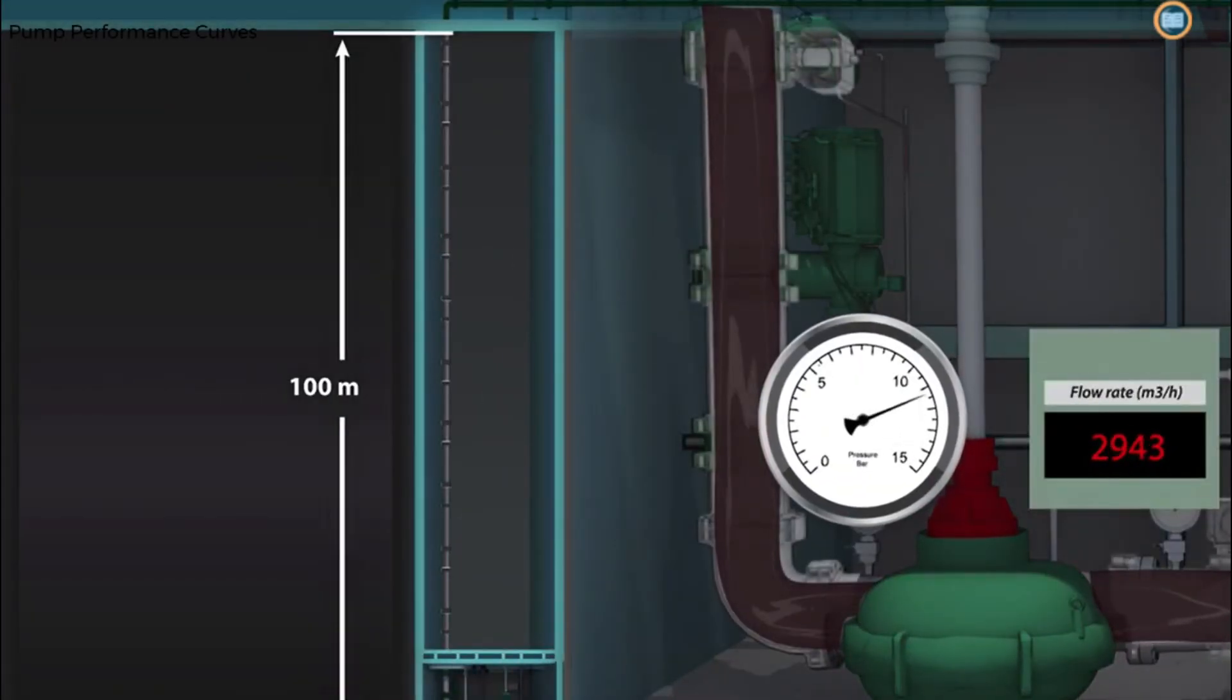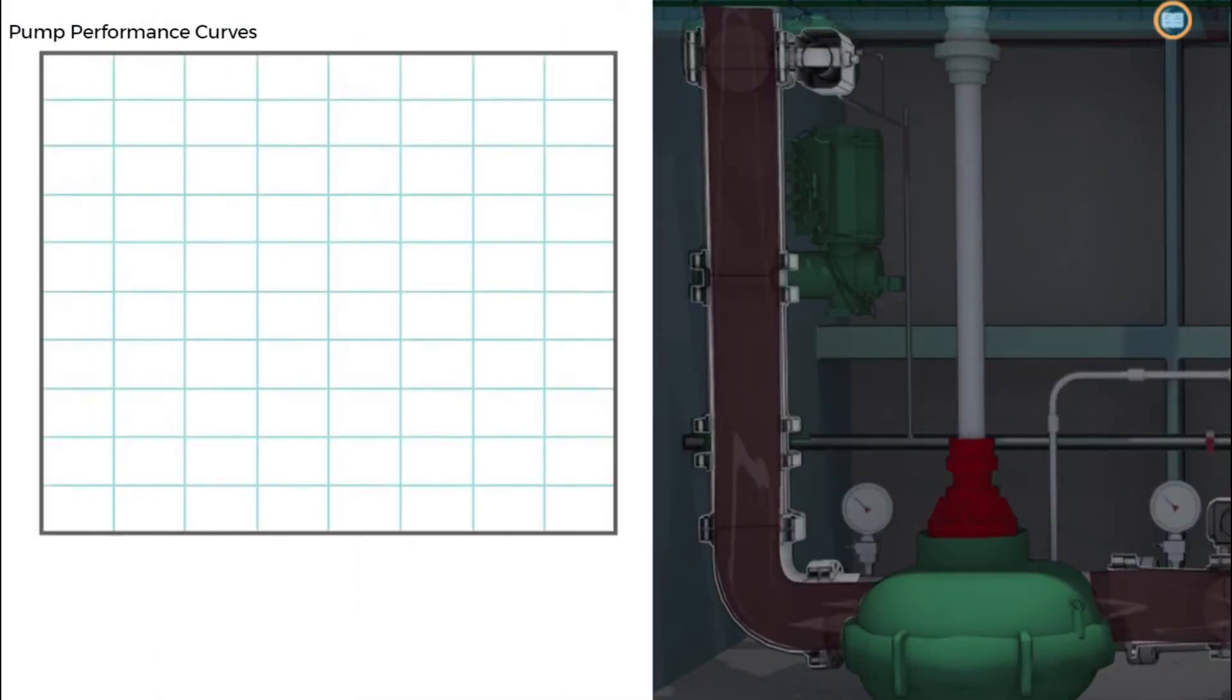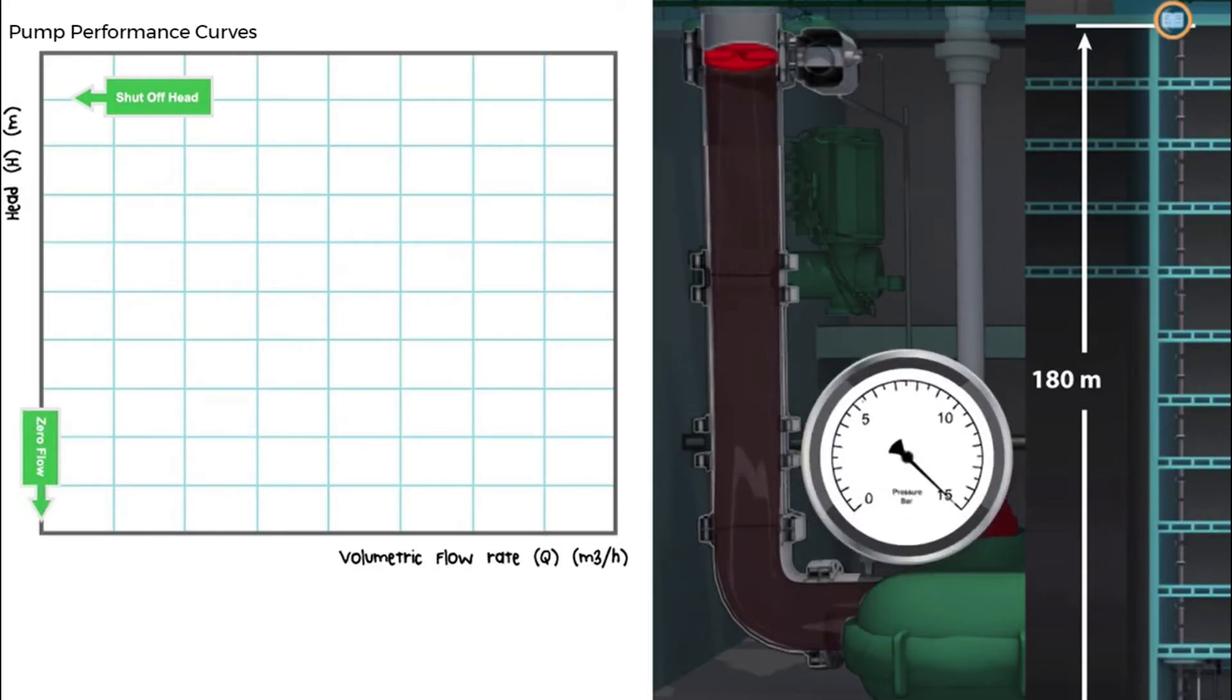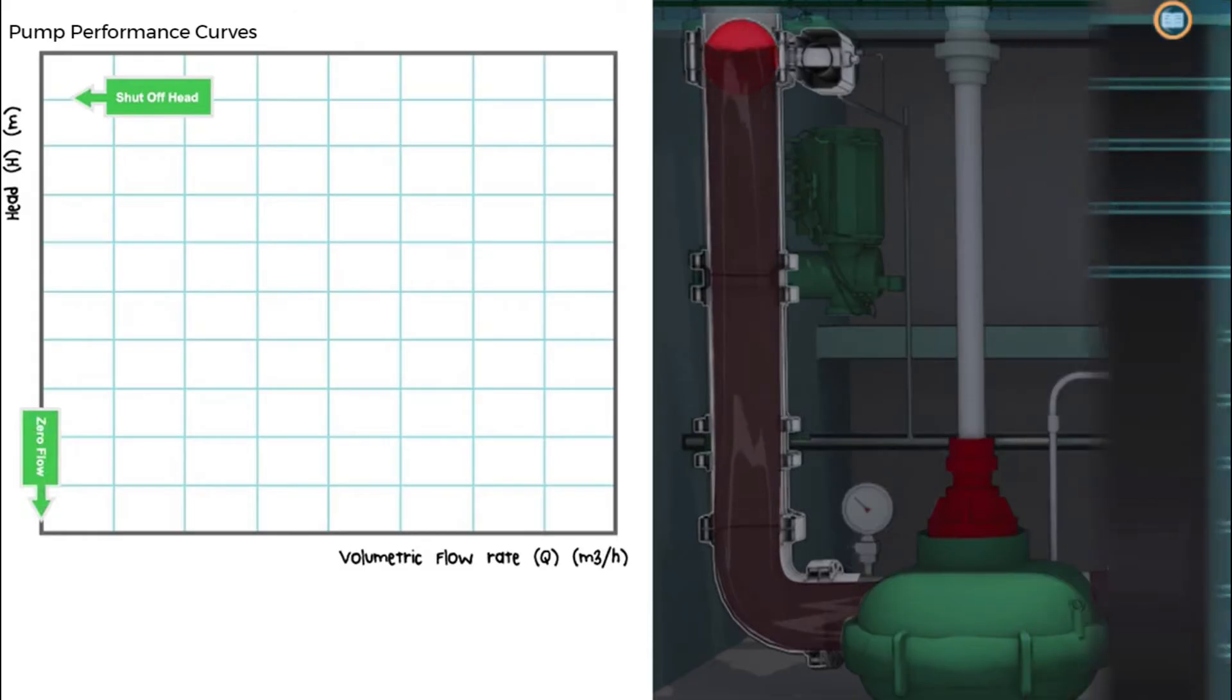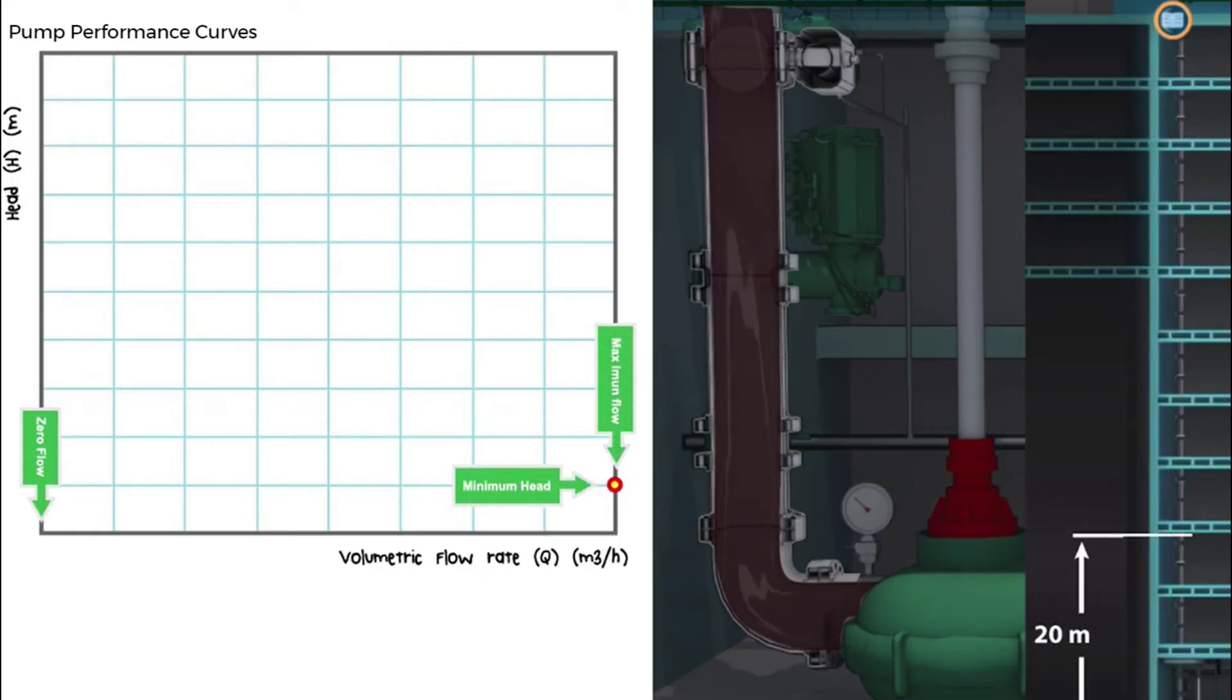How the head changes with flow is a characteristic of a centrifugal pump and this relationship can be shown on a graph here. The x-axis represents the volumetric flow rate in meters cubed per hour. We give this the letter Q. The y-axis represents the head in meters. We give this the letter H. The maximum head that a pump can generate occurs when the flow is zero. We call this the shut-off head and it is equivalent to what would be seen on the pump discharge pressure gauge if the valve was closed against the flow. The maximum flow occurs when head is at a minimum. This would be the case if the pump flow was totally unrestricted.